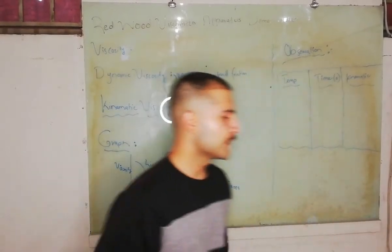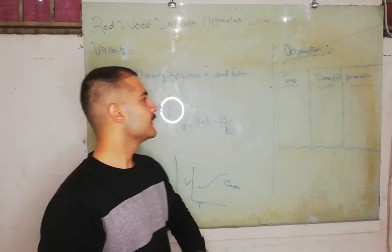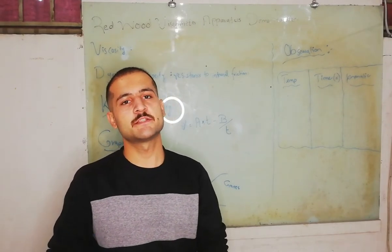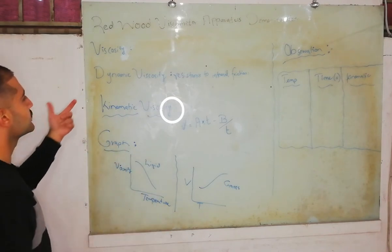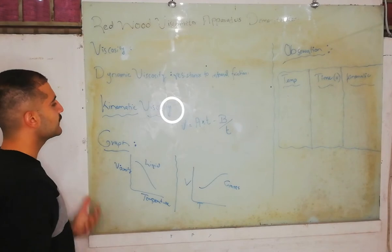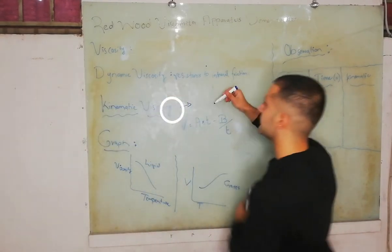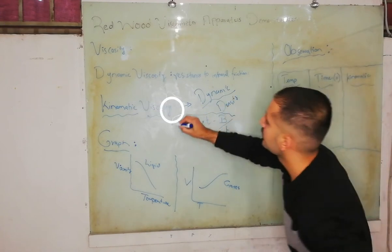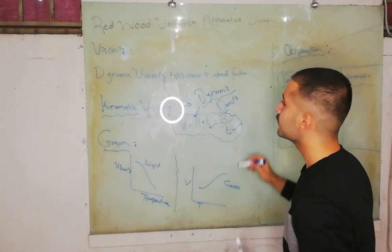Welcome back. Now it's time to play with viscosity using the viscometer. Going further to the board — viscosity is the resistance to the flow. If you don't remember, just remember the comparison between honey and water. Viscosity comprises two types: dynamic and kinematic. Dynamic is the resistance to internal friction, and kinematic is simply dynamic divided by density.